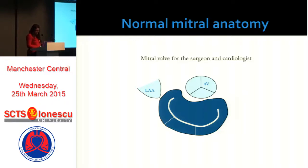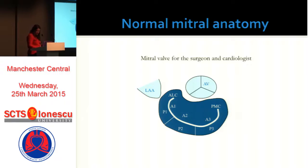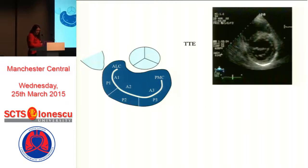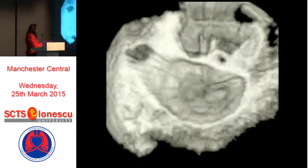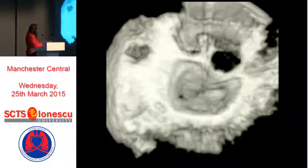Carpentier set up the segmentalization of the mitral valve and divided the posterior leaflet into its three natural scallops, with the left atrial appendage closest to P1, then P2, then P3, and corresponding A1 to A3. The anterolateral commissure sits between A1 and P1, and the posteromedial commissure between A3 and P3. In echocardiography, whether transthoracic short axis or TOE cross-sectional view, you're actually visualizing the mitral valve from the left ventricular aspect, not the atrial aspect — so only 3D echocardiography can simulate the surgeon's eye view.